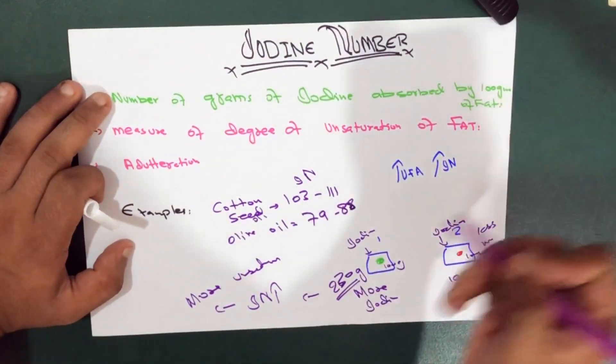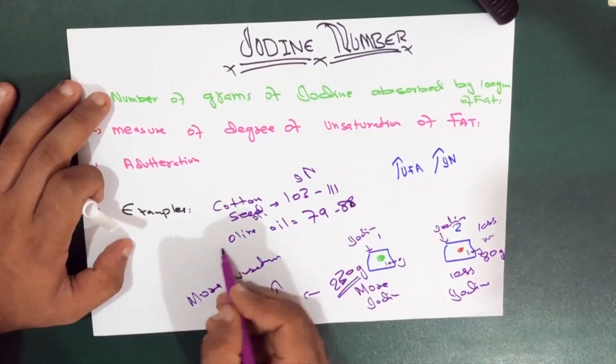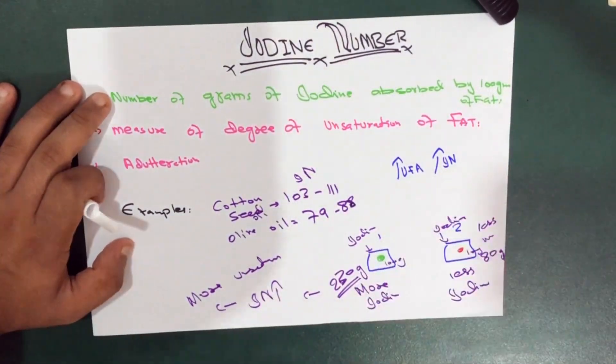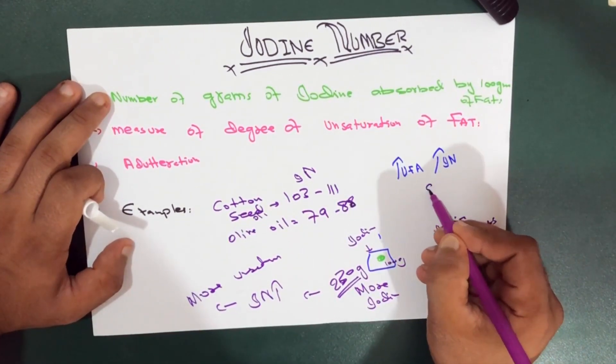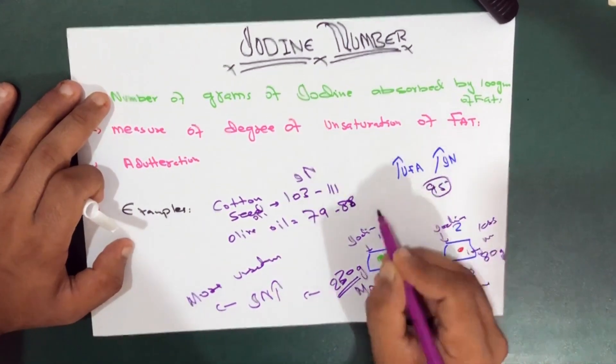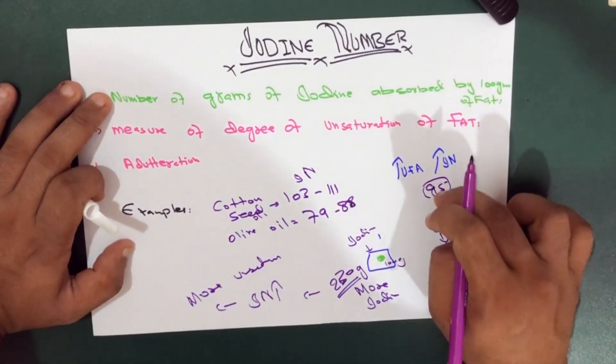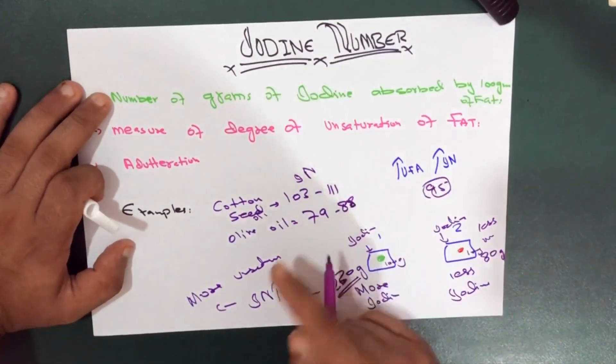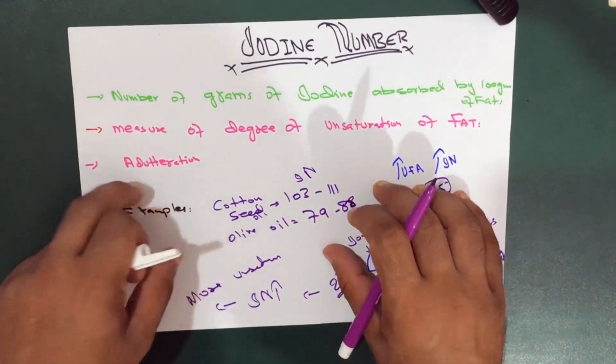For example, if you're buying an olive oil and you find out that the oil you bought has an iodine number of 95, it is an increased number which means there is a mixture of something else with the olive oil. This is adulteration—mixing harmful or unhealthy things with something that is pure.